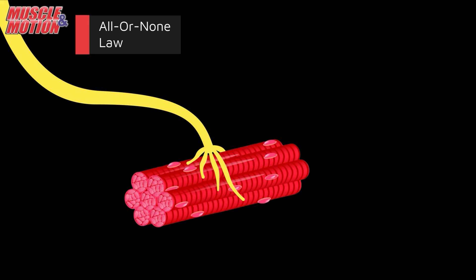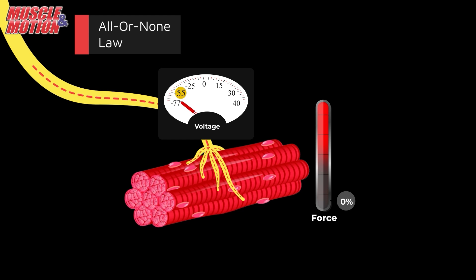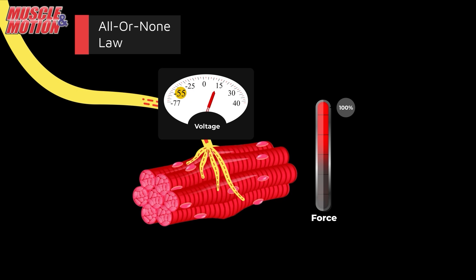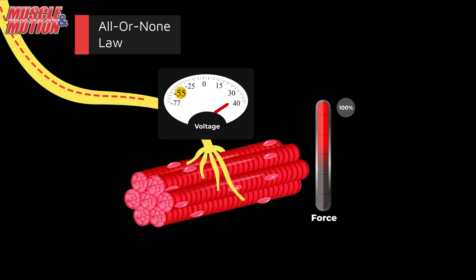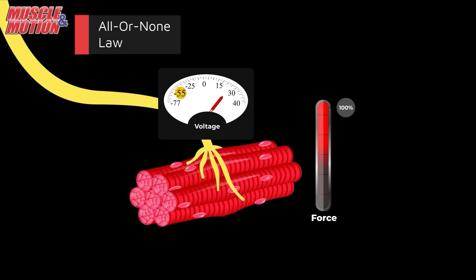The All or None Law: This principle states that if a single motor unit receives a stimulus of sufficient intensity to bring forth a response, all the muscle fibers within that unit will contract at the same time and to the maximum extent. If the intensity or duration of the stimulus is increased, the height of the impulse will remain the same. The nerve fiber either gives a maximal response or none at all.